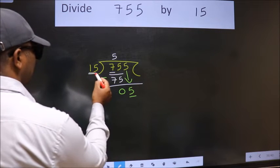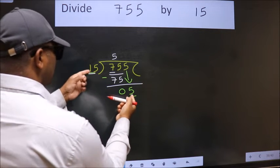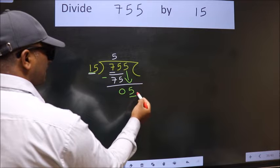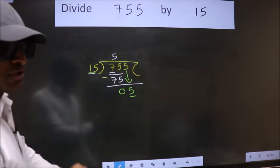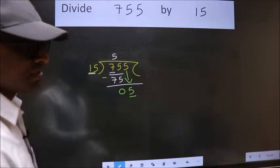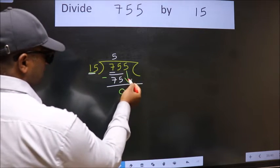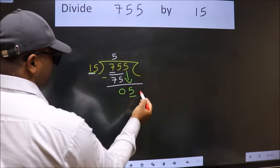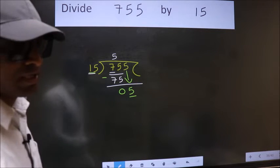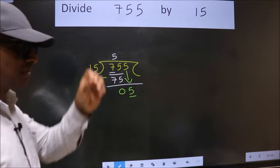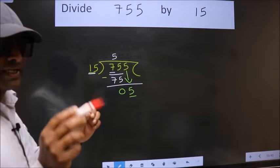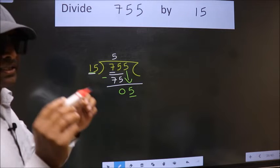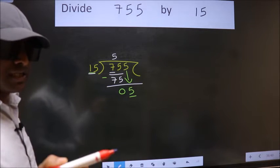Here we have 5. Here 15. 5 is smaller than 15, so what many do is they directly put dot, take 0, which is wrong. Because just now you brought this number down, and in the same step you want to put dot, take 0, which is wrong. I repeat, bring down the number and put dot take 0, both at the same step you should not do.